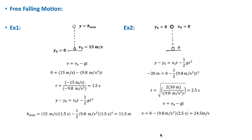Let's consider another example: an object is dropped from rest at a height of 30 meters above the ground. We want to find the time it takes to hit the ground and the velocity just before it does. Since the object is dropped from rest, the initial velocity is zero. We take the initial y position equal to zero at the drop point, so y_final = −30 m.